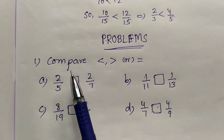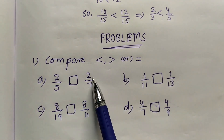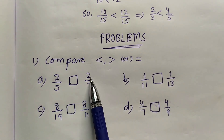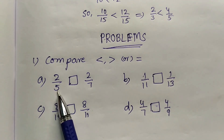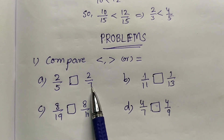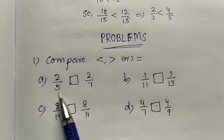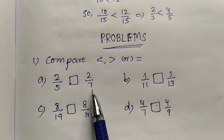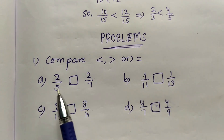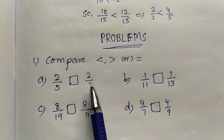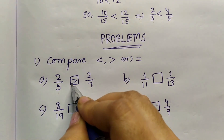Now let us see some problems. Compare with less than, greater than, or equals to. We have 2 by 5 and 2 by 7. Here the numerators are the same. We know that if the numerators are the same, we have to compare the denominators. We have 5 and 7 — 7 is the greater. So that fraction is the smaller one. 2 by 5 is the greater one and 2 by 7 is the smaller one. So 2 by 5 is greater than 2 by 7.